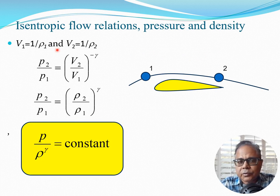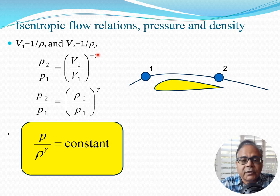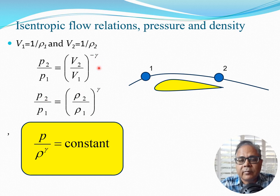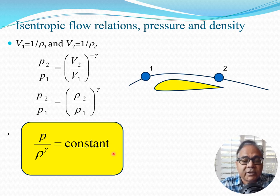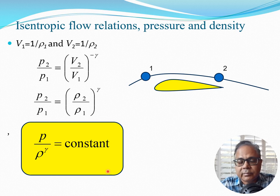Now let's look at density. We can write v1 = 1/ρ1 and v2 = 1/ρ2 since we consider unit mass. Plugging these into the previously derived equation, we get p2/p1 = (ρ2/ρ1)^γ — the sign of the exponent flips because v = 1/ρ. This relates pressure and density between two points. Some people write this as p/ρ^γ = constant, and some textbooks even define isentropic flow as flow satisfying this condition.